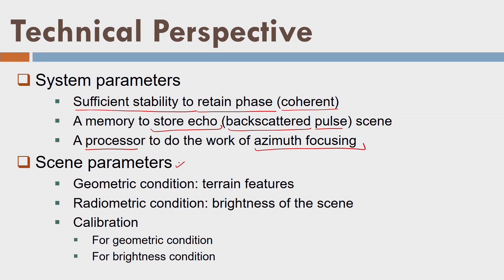Scene parameters include geometric conditions (location of terrain features), radiometric conditions (brightness of the scene — that is, the backscatter response from the surface of earth and the reflectivity of the terrain surface). We need to calibrate the system — similar to calibrating optical cameras. In radar, some backscatter is received and must be calibrated against a reference backscatter. We need to do calibration for both geometric and radiometric conditions. In this lecture we discuss geometric conditions only; in the next lecture, radiometric conditions.